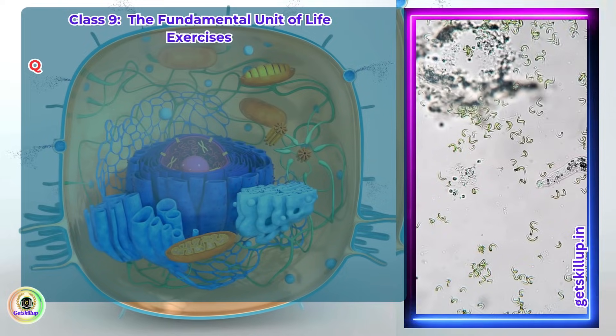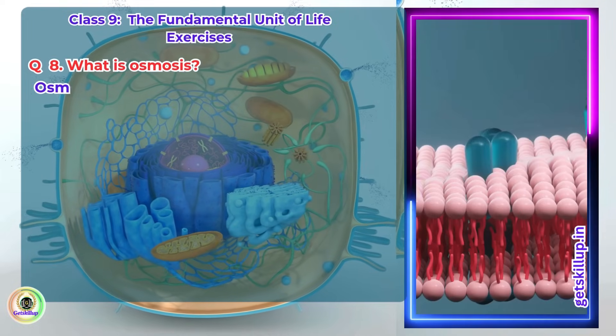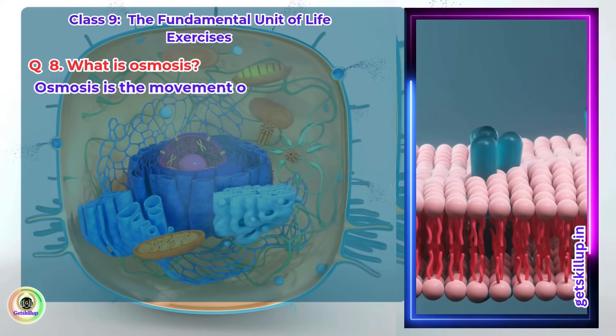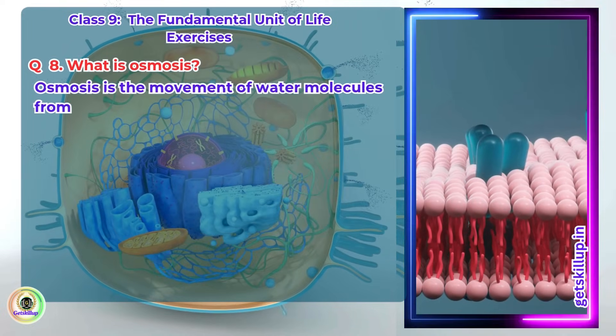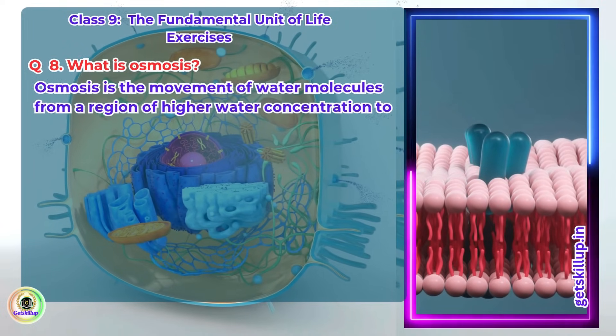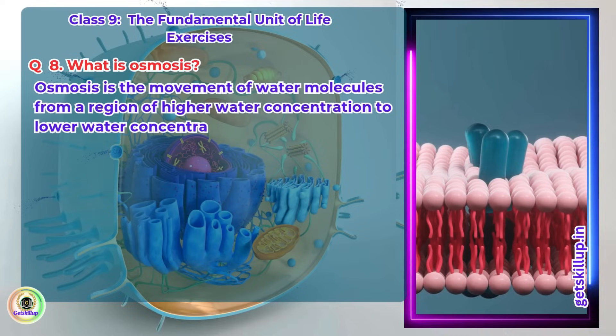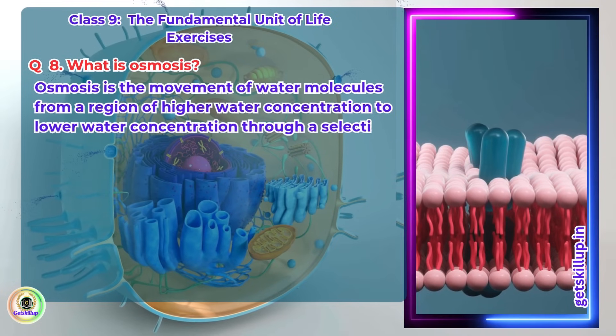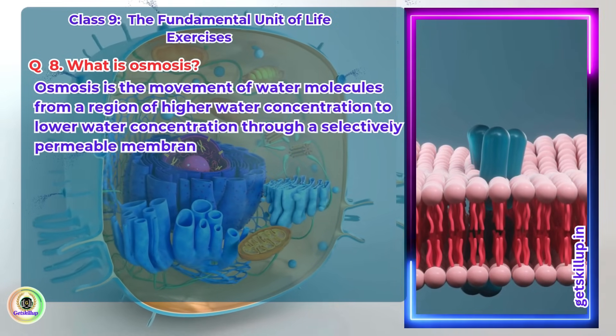Q8. What is osmosis? Osmosis is the movement of water molecules from a region of higher water concentration to lower water concentration through a selectively permeable membrane.